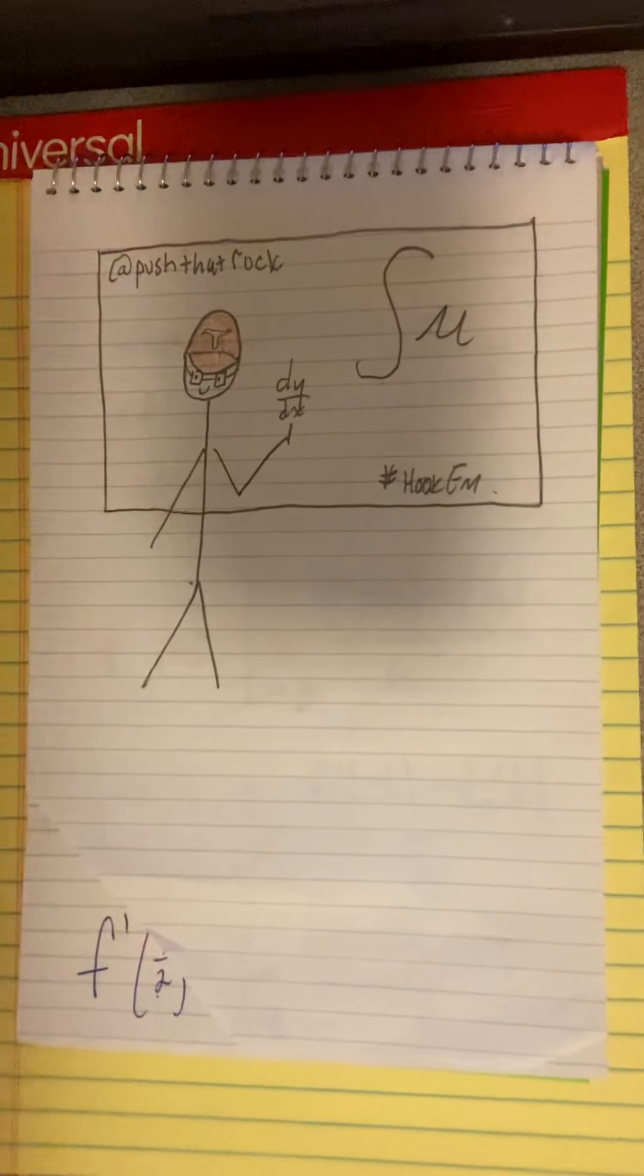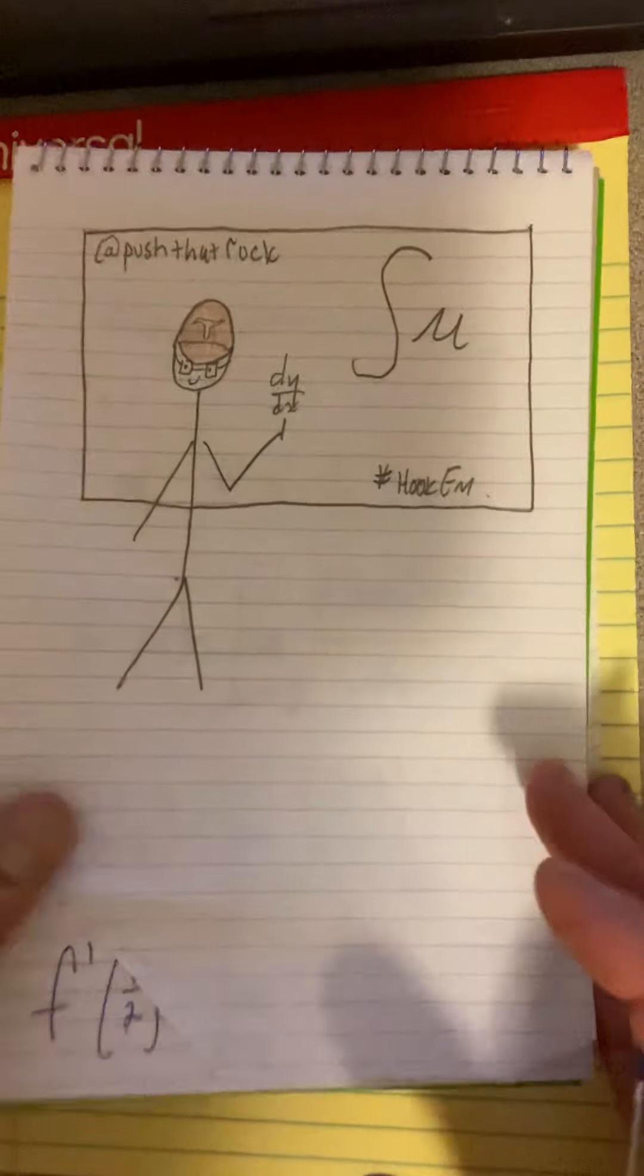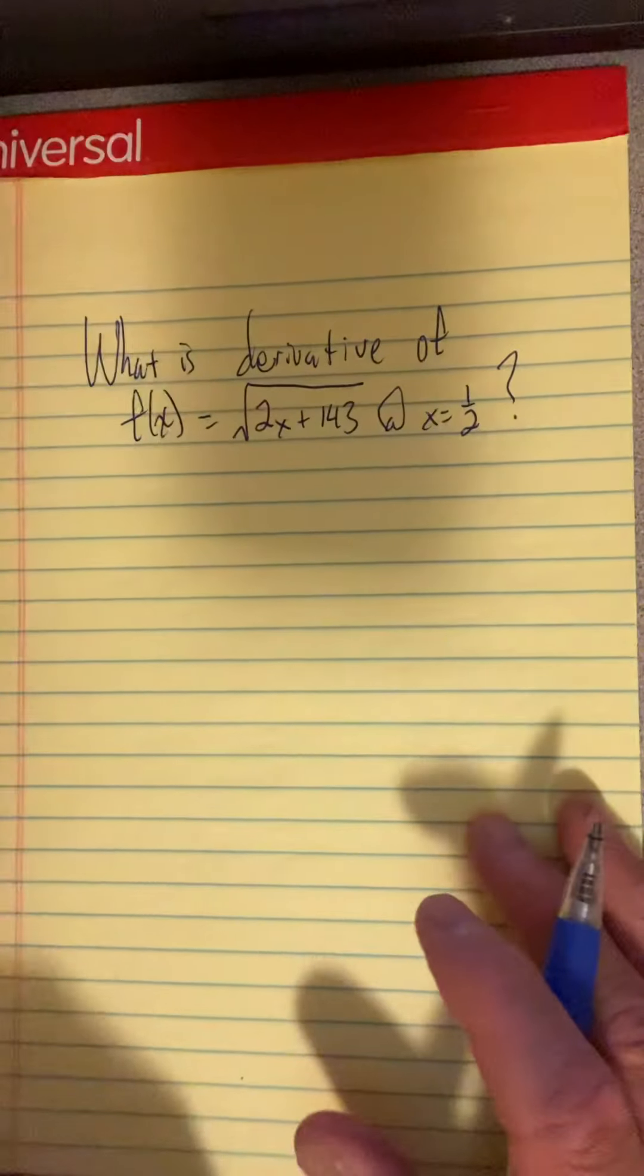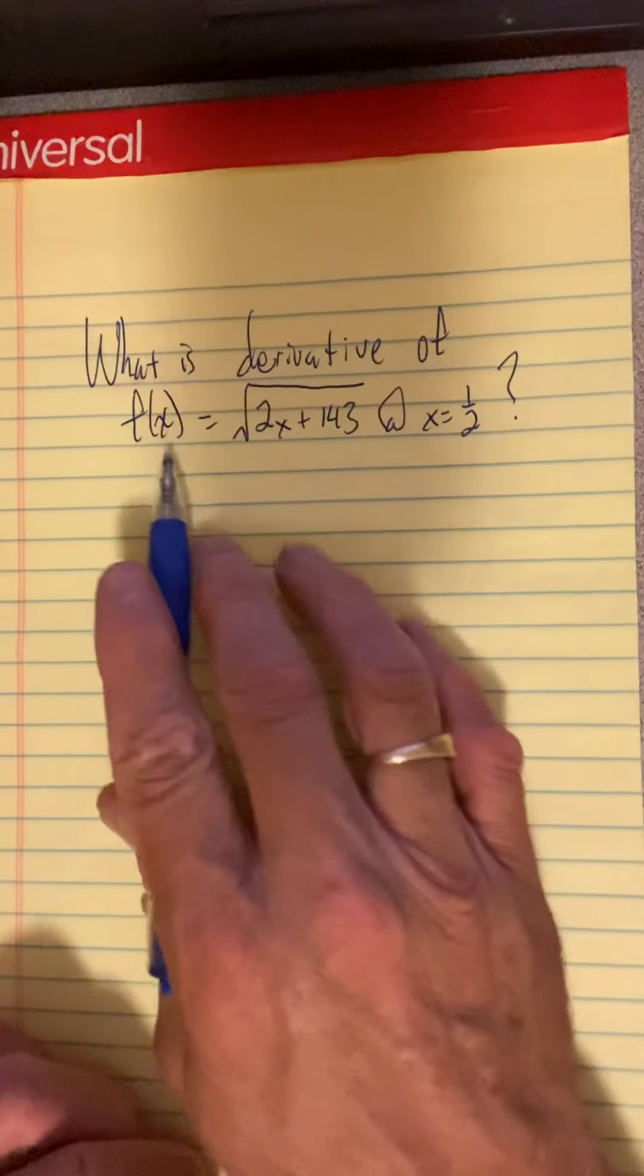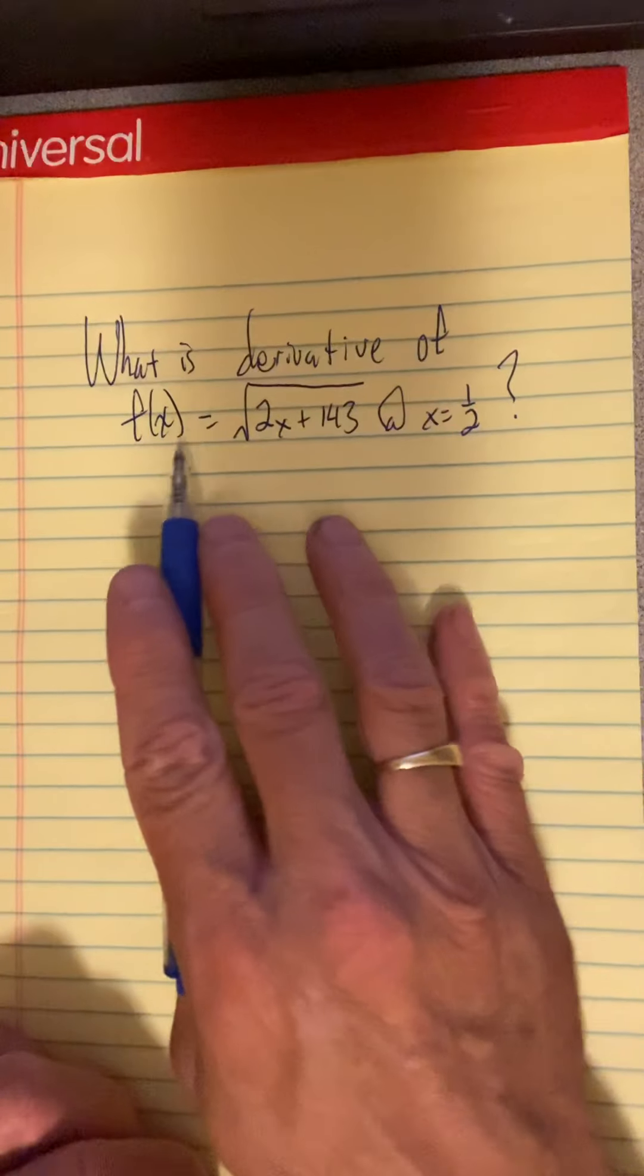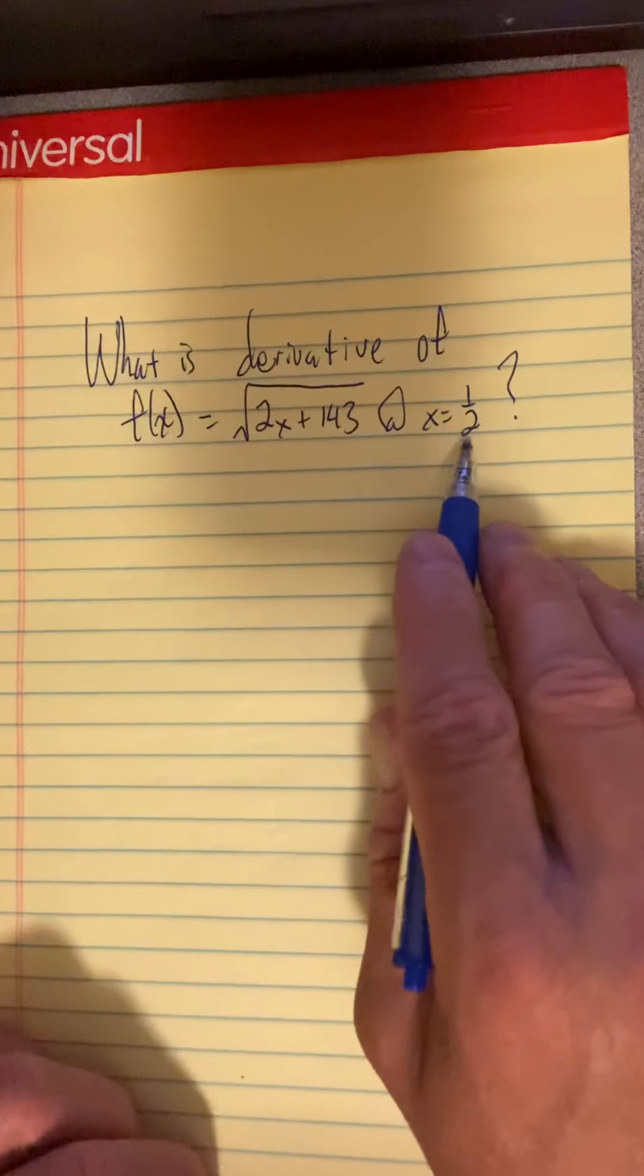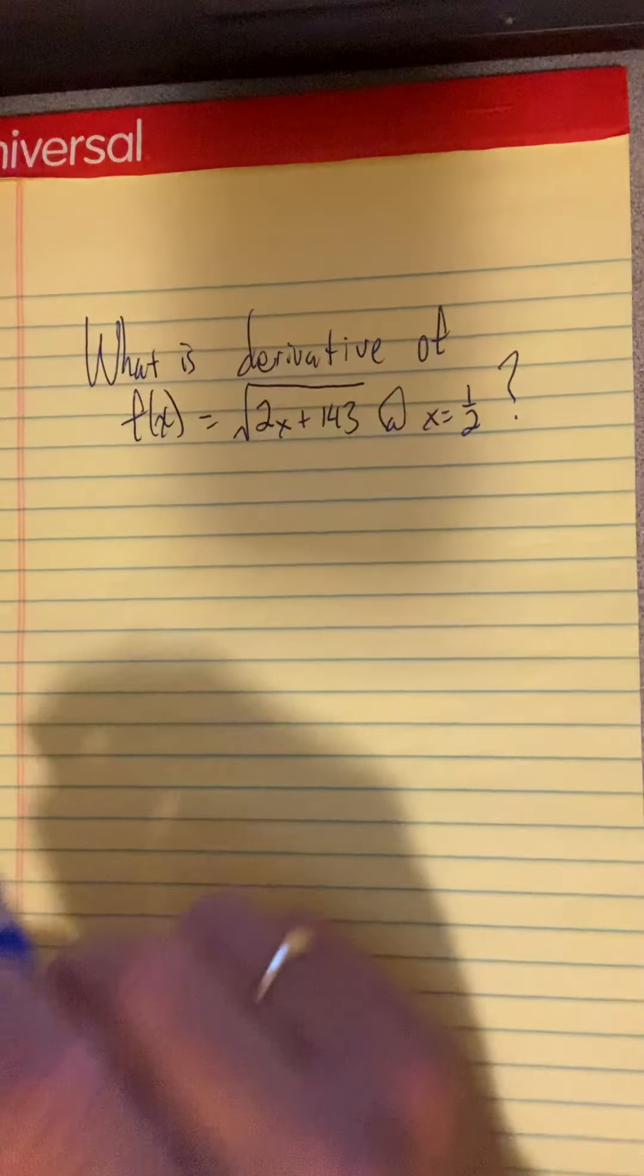Push that rock with Simpson math. Let's answer the question, what is derivative of f of x at x equals a half for this radical function f?